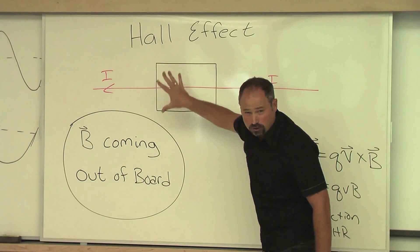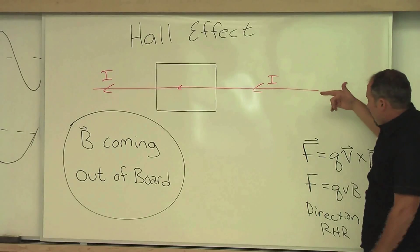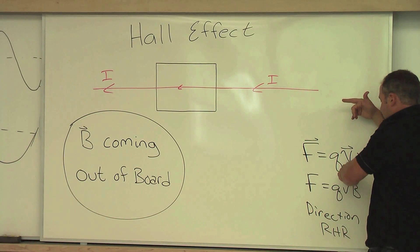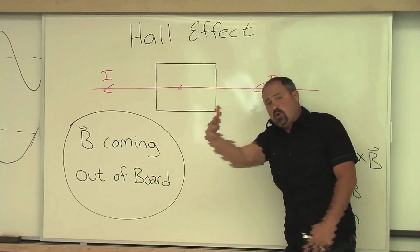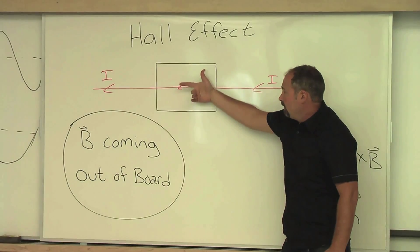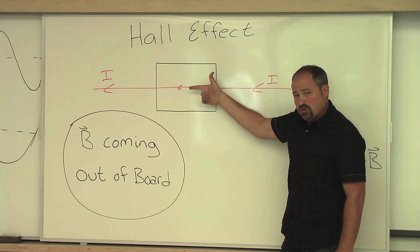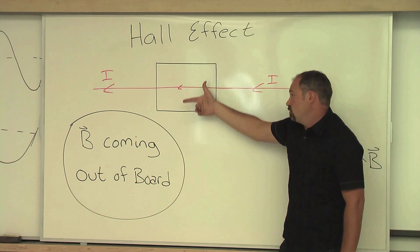This black box is the Hall chip. Electricity is going through like this. We have a charged particle moving with some speed v, and there's a magnetic field coming out of the board. So here's our right-hand rule. Index finger for the direction of the charge movement. Magnetic field coming out of the board, so the force is up.